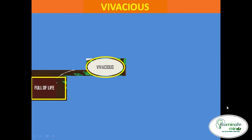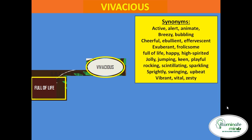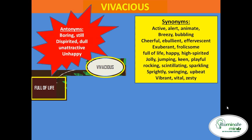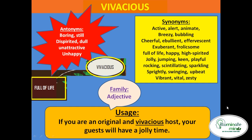Next word is 'vivacious', meaning full of life. Synonyms: active, alert, animate, breezy, bubbling, cheerful, ebullient — ebullient also means happy, cheerful, exuberant — same as effervescent. Hindi mein vivacious ko hum keh sakte hain bahut hi furtila, praful rehne wala. Antonyms: boring, dull, still, unattractive, unhappy, de-spirited — de-spirited ka matlab uske andar kuch zeel nahi. Word family is adjective. Usage: if you are an original and vivacious host, your guests will have a jolly time.